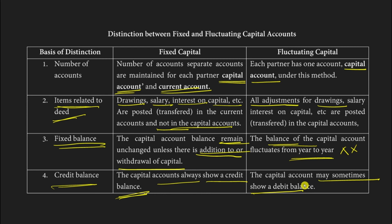These are the main differences between the fixed capital method and the fluctuating capital method. In fixed capital, the balance remains the same, changing only in rare cases like adding or withdrawing capital. In fluctuating capital, it always changes due to deed-related items. I hope this makes it easy for you. If you like this video, hit like and share with your friends. See you in the next video!